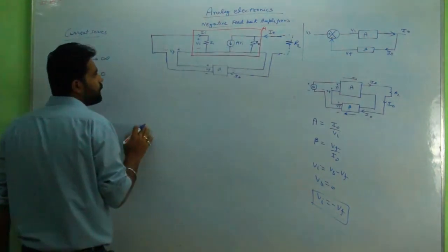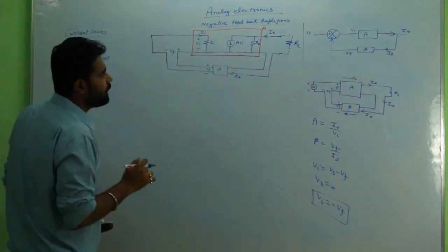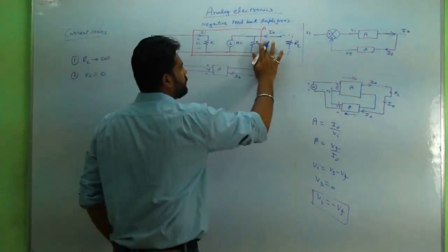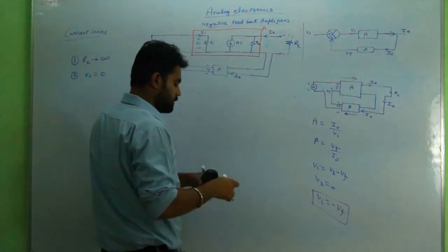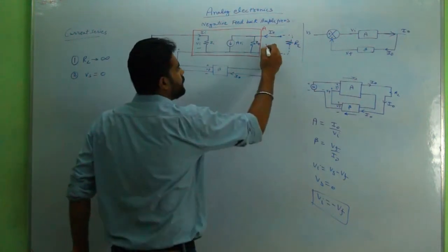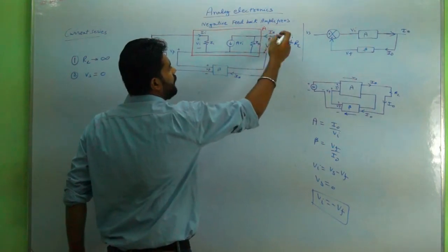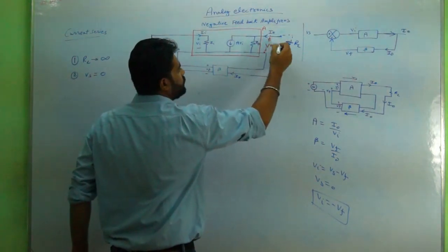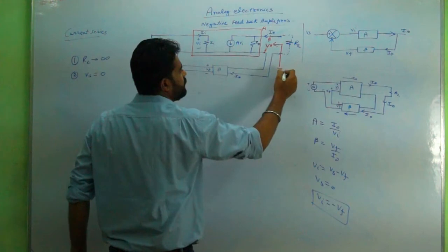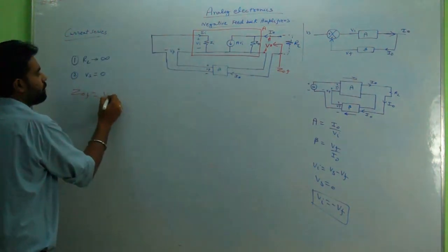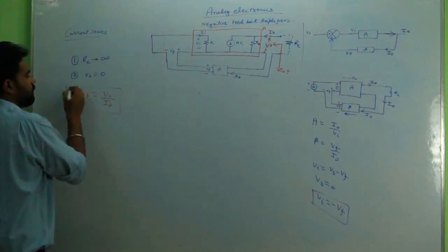This is all. And what about Z_naught? This is v_naught available between two nodes here, and i_naught is the current. So Z_of, I'll write it as Z_of equal to v_naught upon i_naught. This is what we have to derive mathematically.